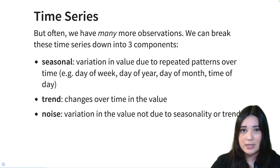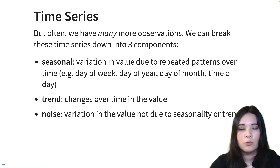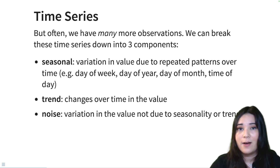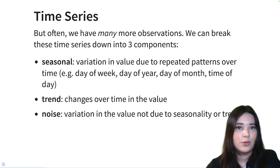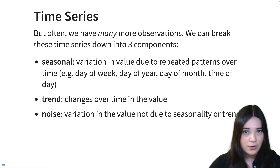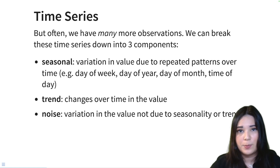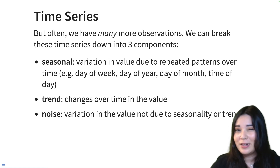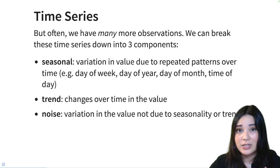First, we have a seasonal component. Seasonal components are variations in your values that are due to some repeating, periodic pattern. For instance, let's say that you're selling candles. You might have weekly seasonality because people are more likely to buy candles Saturday through Monday when they're sort of still in their weekend vibes, and less likely to buy them on Tuesday through Thursday.